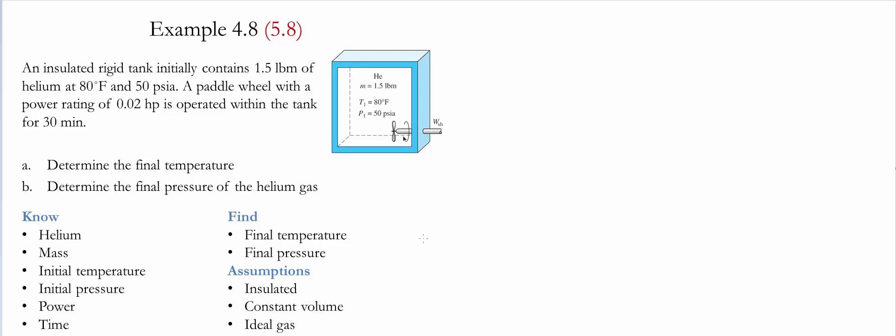Example 4.8 of 5.8 for the given textbooks. For details, please see the description below. In this example, an insulated rigid tank initially contains 1.5 pound mass of helium at 80 Fahrenheit and 50 PSIA. The paddle wheel with a power rating of 0.02 horsepower is operated within the tank for 30 minutes. The goal of the example is to determine the final temperature of the process as well as the final pressure of the helium gas.